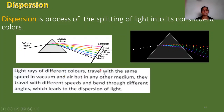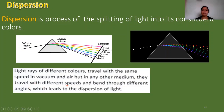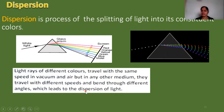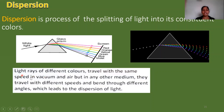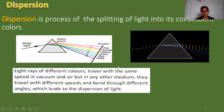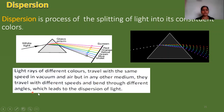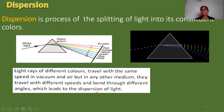Light rays of different colors travel with the same speed in vacuum and air. But in any other medium, they travel with different speeds and bend through different angles, which leads to the dispersion of light — that is, white light splits into 7 colors.